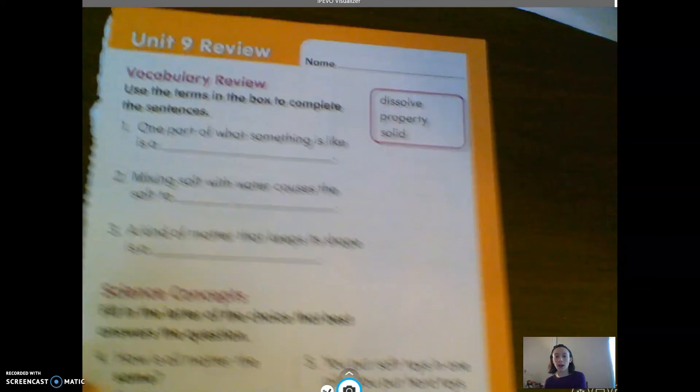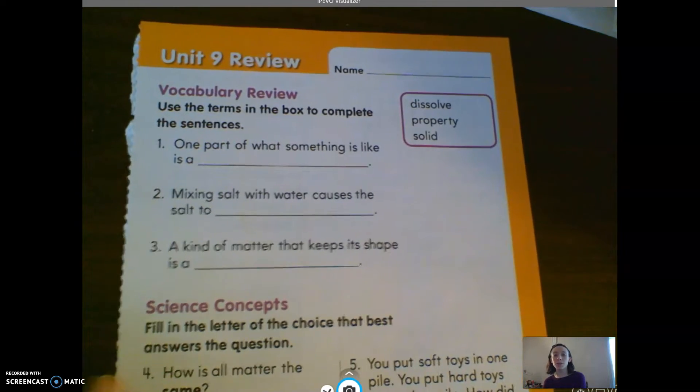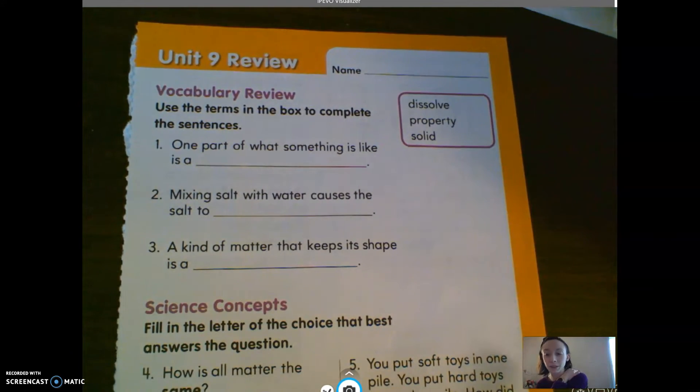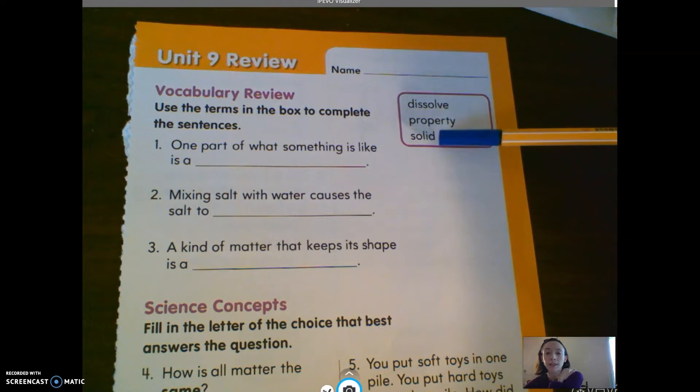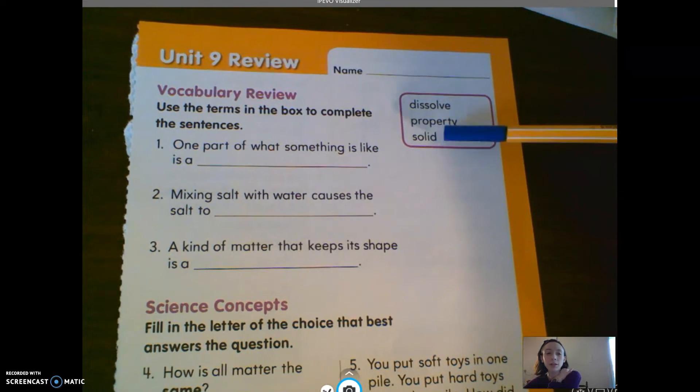Starting on the front, on page 365, it says use the terms in the box to complete the sentences. We have the word dissolve, property, and solid.